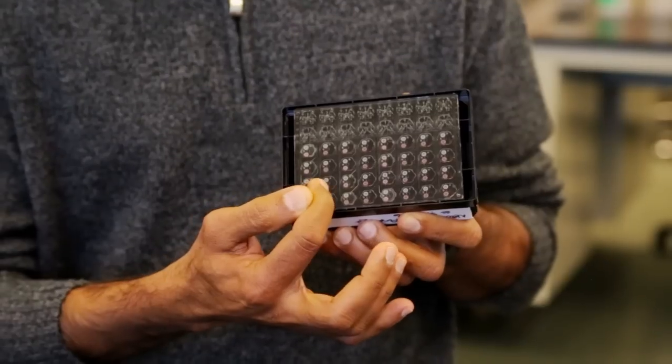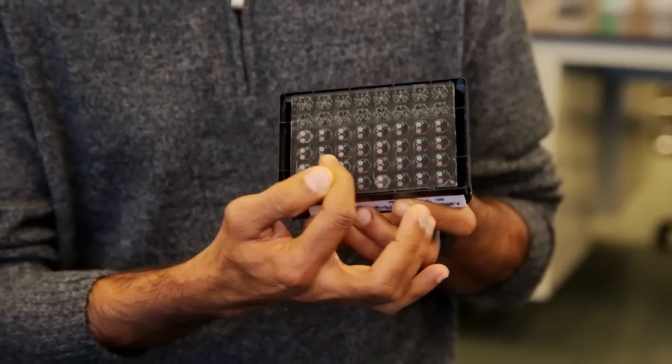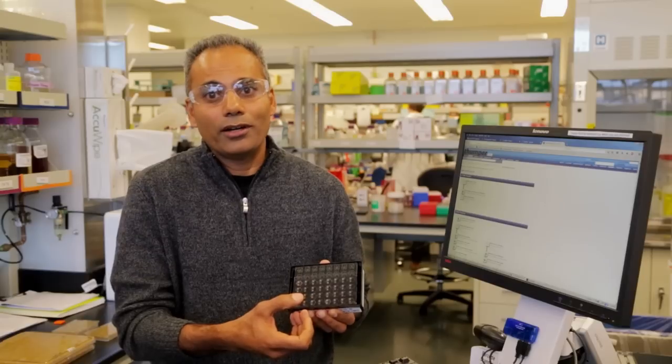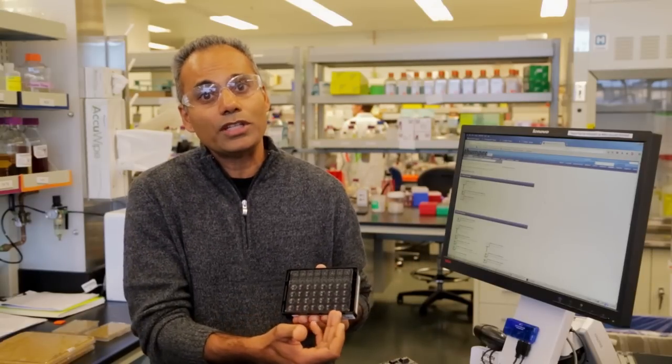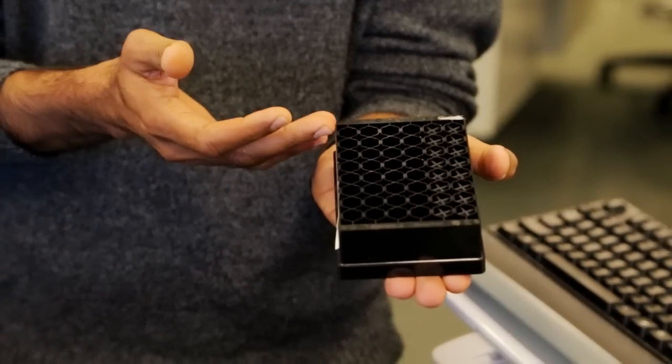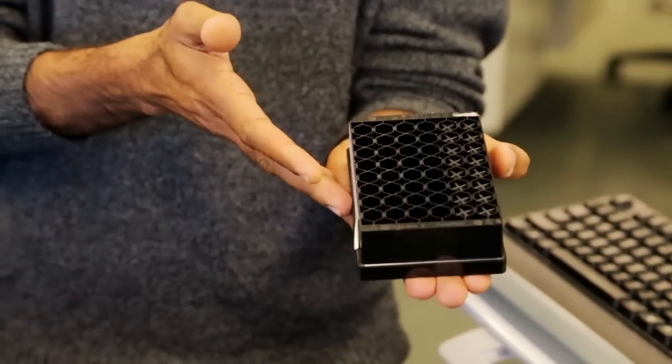You also have these tiny microfluidic channels that allow your controller to feed sugar or a base or an acid to maintain the pH based on how the conditions within each culture will change. Interestingly, you can recapitulate all the work that you would do in an entire lab, and that's in the palm of my hands right now.